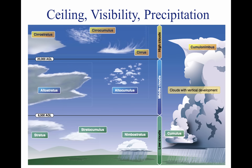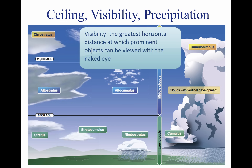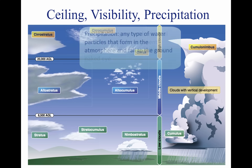Closely related to cloud cover and reported ceilings is visibility information. Visibility refers to the greatest horizontal distance at which prominent objects can be viewed with the naked eye. Current visibility is also reported in METAR and other aviation weather reports, as well as by automated weather systems. Visibility information as predicted by meteorologists is available for a pilot during a pre-flight weather briefing.